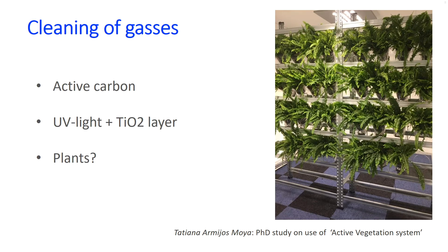For cleaning air from gaseous pollutants, some options are available — for example, active carbon filters to filter the air of volatile organic compounds, or a layer of titanium dioxide on a surface in combination with UV light. Additionally, plants have been used. Plants make people feel better and less stressed, and can therefore positively influence their well-being.